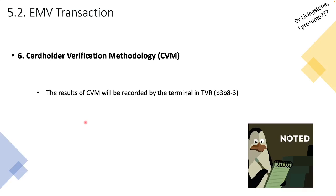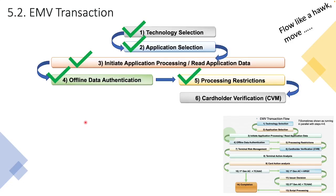As we've been repeating throughout this training, the results of step six — CVM — get recorded by the terminal once again in TVR, in this case byte three, bits 8 to 3.